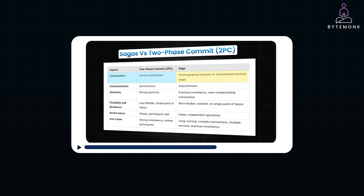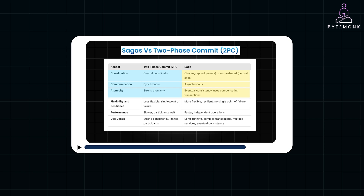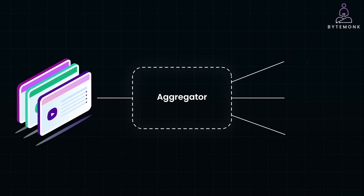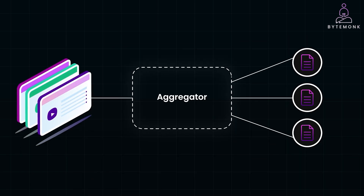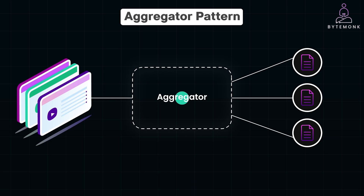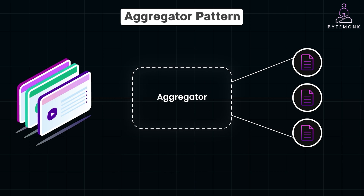If you haven't, please check out my video on the saga pattern after this. Now let's try to understand the aggregator pattern with more concrete examples. In a microservices architecture, fulfilling a single client request often involves multiple services working together. The aggregator pattern simplifies this process by acting as a coordinator that collects responses from various services and combines them into a single unified result.